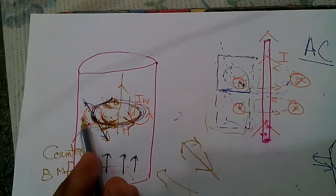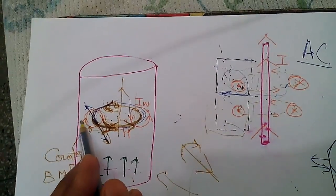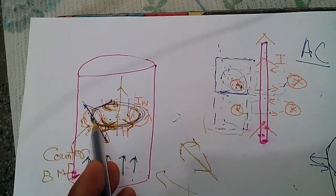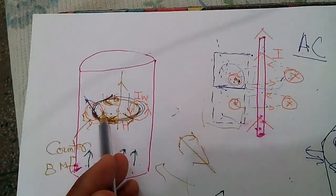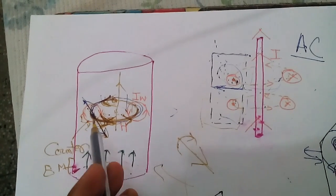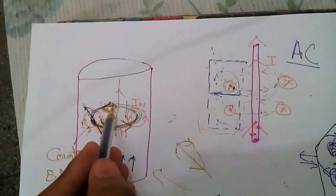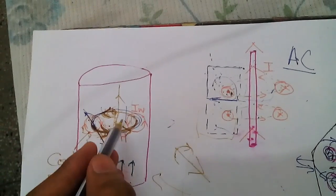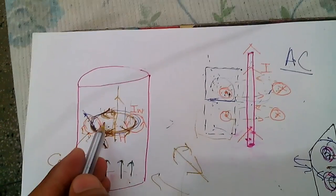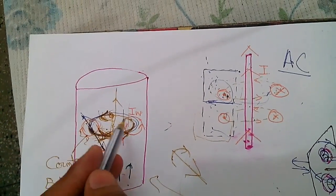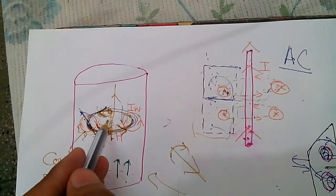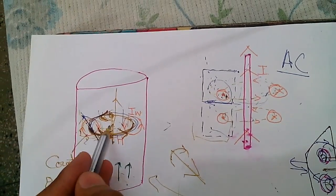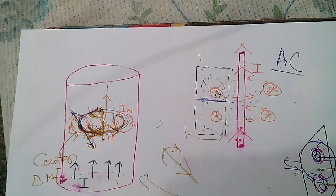So we can see that in the core section the net current is less, and on the outside the current is more — this is the skin effect. This cannot occur in DC because there is no changing magnetic field and hence no eddy current. Due to the eddy current, a back EMF is introduced in the center of the core, which opposes the current and increases the net reactance inside the core, so current flows only on the outer surface.